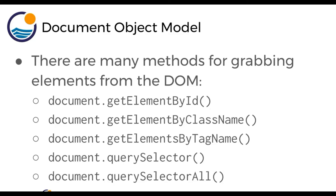The querySelector can accept any CSS style selector — you can use the hashtag to clarify it's an ID, or the dot for a class. Basically anything you'd use as a CSS style selector, you can pass it directly into querySelector. The difference between querySelector and querySelectorAll is that querySelectorAll returns a list of all matches, while querySelector just returns the first match.